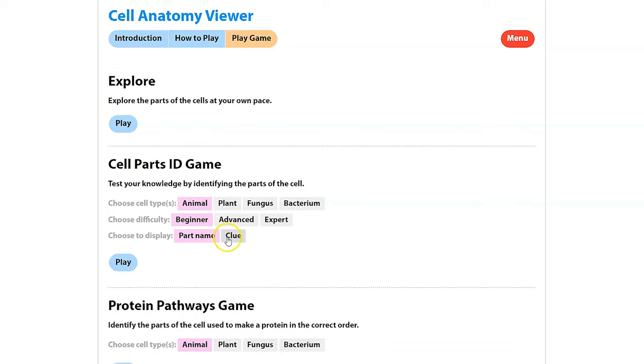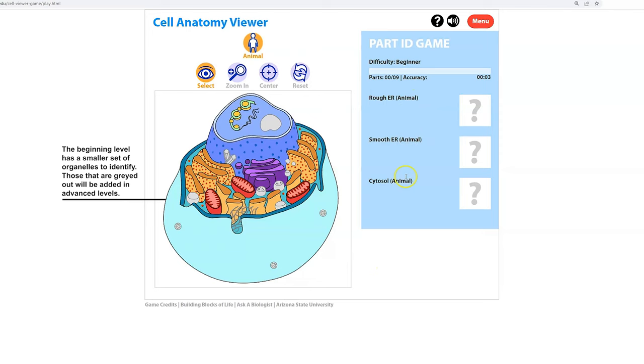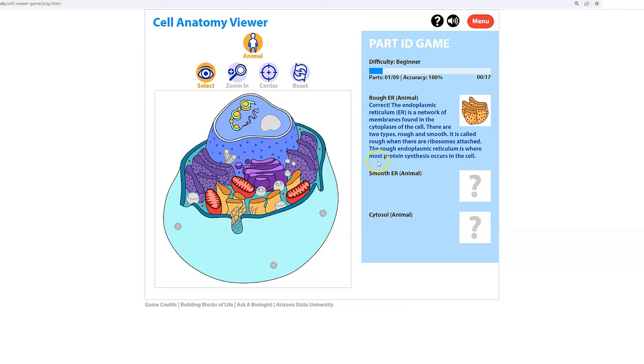I'm going to set everything at beginner. I'm just going to leave it on animal. I'm going to do the part name. I'm not going to ask for a clue. If you ask for a clue, that makes it a little bit easier. I'm going to go play. The parts are displayed in a random order each time, so the game is different each time you play it. Here we are looking at rough ER.